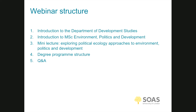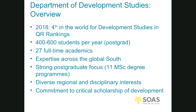Let's move on to the overview of the Department of Development Studies. In 2018 we were ranked fourth in the world for Development Studies in the QS rankings, which is a global ranking system. We have about 400 to 600 postgraduate students per year, and more undergraduates as well. We're a department with 27 full-time academics, we have expertise across the Global South, and a very strong postgraduate focus with 11 MSc degree programmes. We have very diverse regional and disciplinary interests around the Middle East, Africa and Asia, and to a lesser extent Latin America.